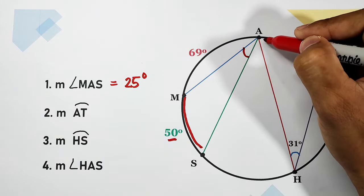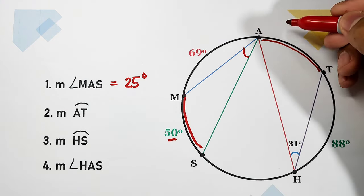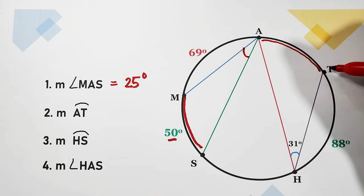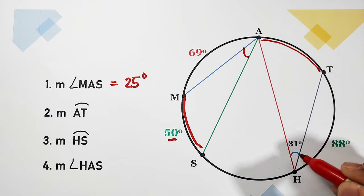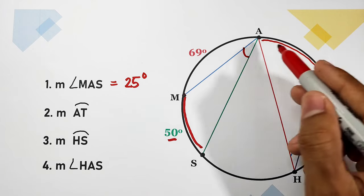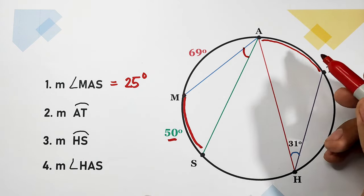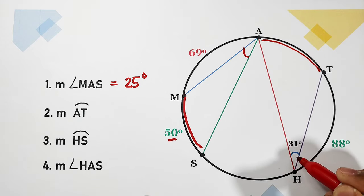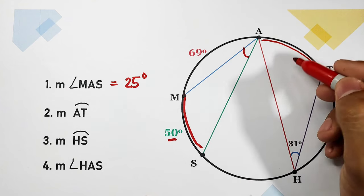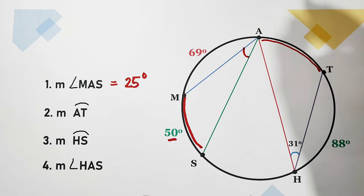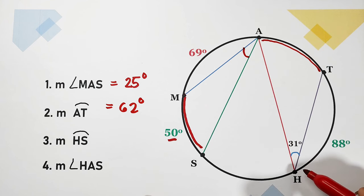For number two, arc AT: since we are looking for the measure of the arc, that is the intercepted arc of inscribed angle AHT. The inscribed angle is one half of the intercepted arc, so the arc is equal to twice the measure of the inscribed angle. The inscribed angle is 31 degrees, therefore arc AT is equal to 62 degrees.